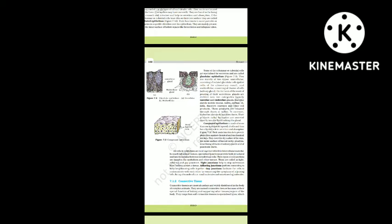Compound epithelium is made of more than one layer of cells and thus has a limited role in secretion and absorption. Its main function is to provide protection against chemical and mechanical stresses. It covers the dry surface of the skin, the moist surface of the buccal cavity, pharynx, inner lining of ducts of salivary glands and of pancreatic ducts.